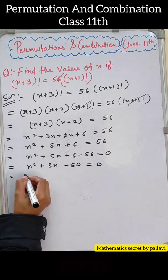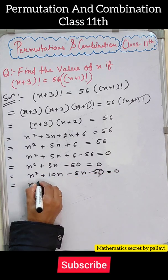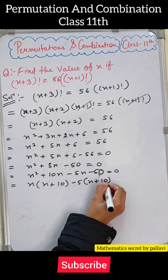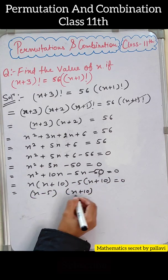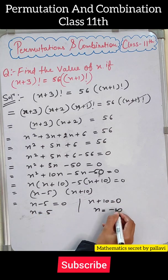Canceling (n+1)! from both sides, we're left with (n+3)(n+2) = 56. Solving this gives us n² + 5n + 6 = 56, which simplifies to n² + 5n - 50 = 0, or (n+10)(n-5) = 0.